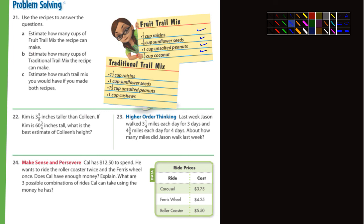Problem 22, Kim is 3 5/8 inches taller than Colleen. If Kim is 60 3/4 inches tall, what is the best estimate of Colleen's height? So Kim is 3 5/8 inches taller than Colleen. Let's deal with this. 3 5/8. Is that closer to 3 or closer to 4? As far as inches, it's going to be closer to 4 inches. So Kim is 4 inches taller than Colleen. If Kim is 60 3/4 tall, what is the best estimate of Colleen's height? So you're gonna have to subtract that, because Kim is this tall and she's about 4 inches taller than Colleen. So do the subtraction there.